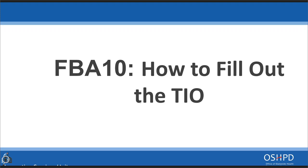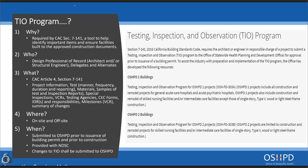So the TIO program — why do we need it? The TIO program is required by the California Administrative Code Section 7-1141. It's also a helpful tool to identify important items and ensure facilities are built to the approved construction documents. The design professional of record is responsible for the TIO; the architect and/or structural engineer delegates and alternates as well. Remember that the TIO is not the responsibility of the IOR, the special inspector, or the contractors on site.